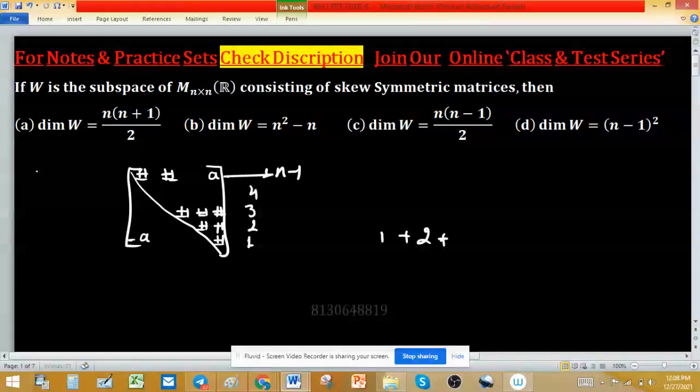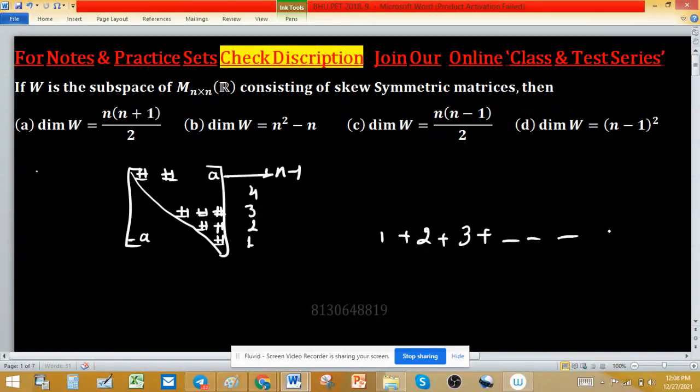So we have to add all these because we are seeking at how many places we are free. 1 plus 2 plus 3 plus up to n minus 1, and this sum is nothing but (n minus 1) times n divided by 2.